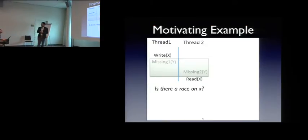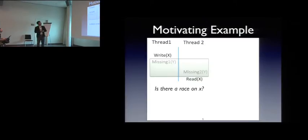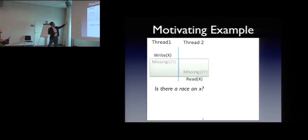But all these missing events may lead to imprecise results by the existing precise algorithms. Let me give you some examples. So this is a very simple example. There's two threads. There's a write to x by thread 1 and the write x by thread 2. And you can see this gray area. Something's missing here. So thread 1 calls missing method 1, take parameter y, and thread 2 calls missing method 2, take parameter y. Here's a question. Is there a race on x?